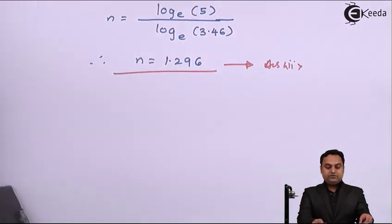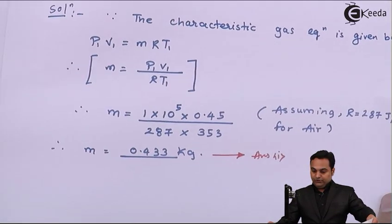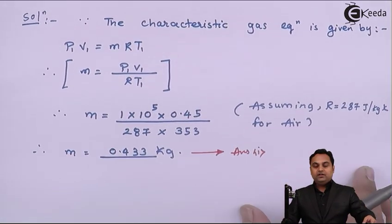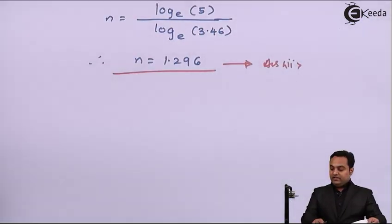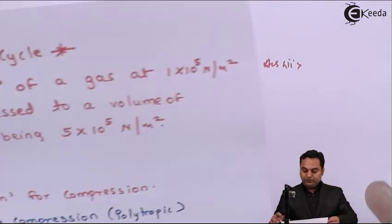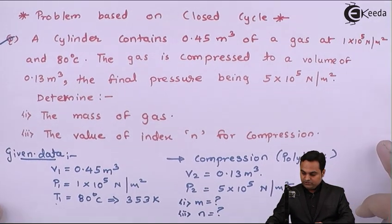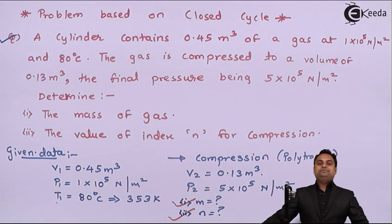So at first we calculated the mass which was 0.433 kg, answer number one, and secondly we calculated the value of polytropic index n which is 1.296. Both these questions were asked. With this we complete the problem.